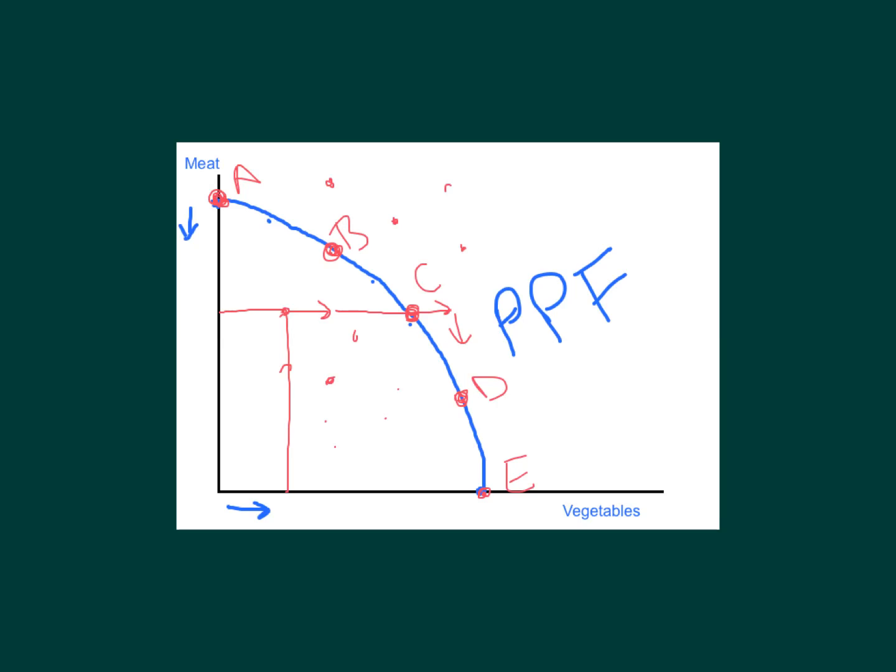What determines where they produce is something we call consumer preferences — what do the people want. The blue line, the PPF, shows what is possible to produce but doesn't show what they would or should produce. For example, if this country was a society of vegetarians, they'd probably pick point E — all vegetables and no meat. That highlights that the PPF is all about production possibilities.